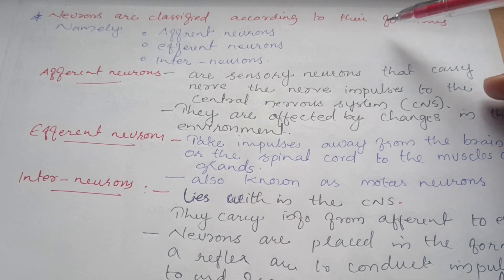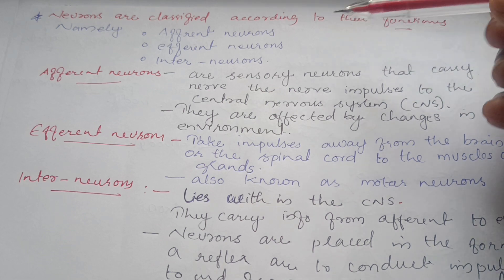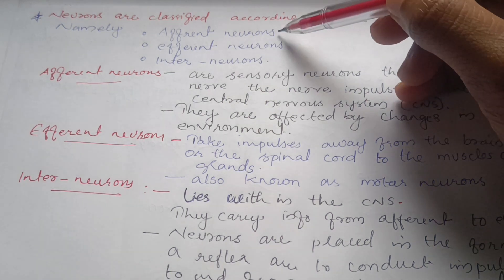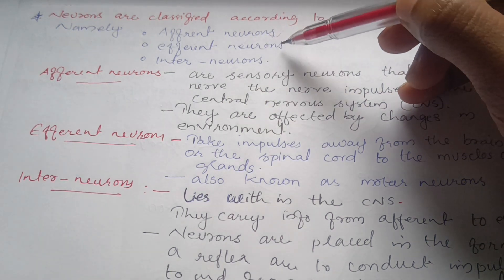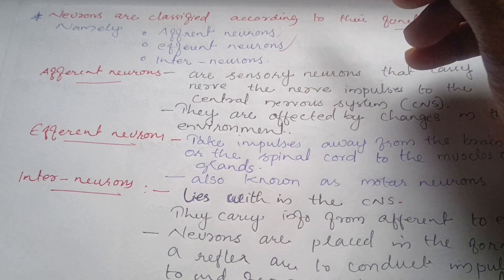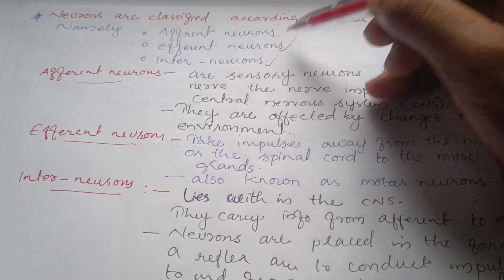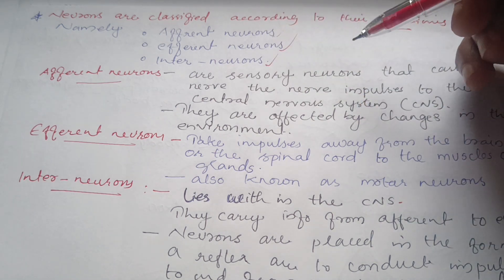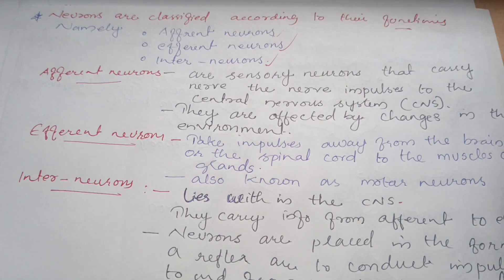Next, neurons are also classified according to their function. In terms of function, there are three types: afferent neurons, efferent neurons, and interneurons.